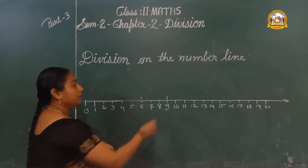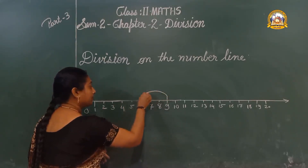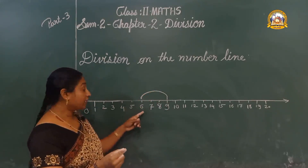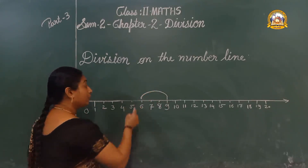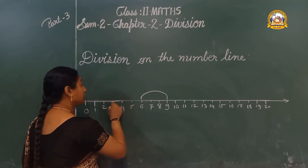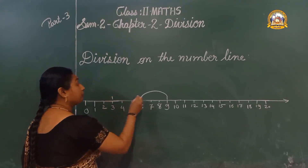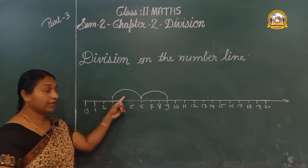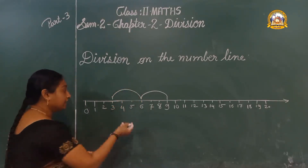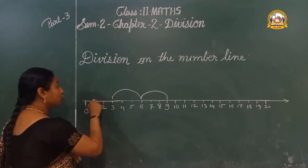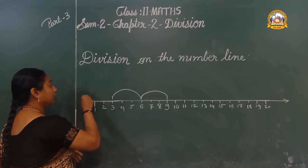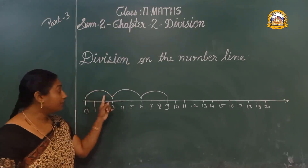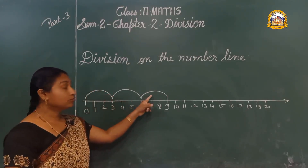Next, again subtract 3 from 6: count 1, 2, 3 — we reach 3. That is the second jump. And again: 1, 2, 3 — we reach 0. That is the third jump. How many times? 1, 2, 3.